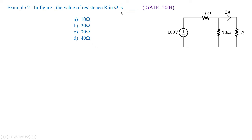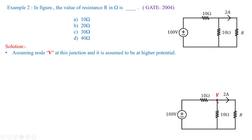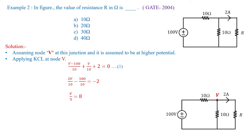In the next problem we have to find out the value of resistance R in ohms. You can see that 2 amperes flows through R. This is from Gate 2004 and is also a two-mark problem. We assume a node voltage V at the junction, assumed to be at higher potential. Applying KCL at node V: (V minus 100) divided by 10, plus V divided by 10, plus 2 equals 0. Solving this gives V equal to 40 volts.